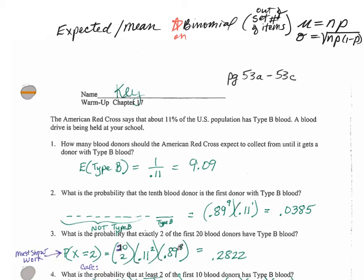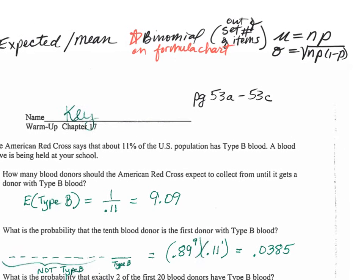These formulas are on the formula chart, which you can always use. I'll put those in your hands tomorrow when we take the quiz — I'll give you my laminated copies. Now, if we do the geometric, that one is not on the formula chart, so you have to know it deep in your heart. The wording that goes with geometric is: how many are you going to go until you get one? How many things do you expect to do or to find until you get one? And that formula is 1 over P.